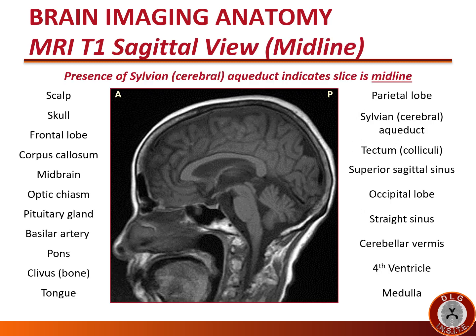To further our perspective of brain imaging anatomy, we are now going to review an MRI T1 sagittal view in the midline. The sylvian aqueduct is in the midline and is as thin as a pencil lead, so its presence on a sagittal MRI indicates the slice is midline. As we go through the anatomic structures listed on this slide, we will eventually get to the sylvian or cerebral aqueduct. Pause and see if you can identify the structures listed before proceeding.